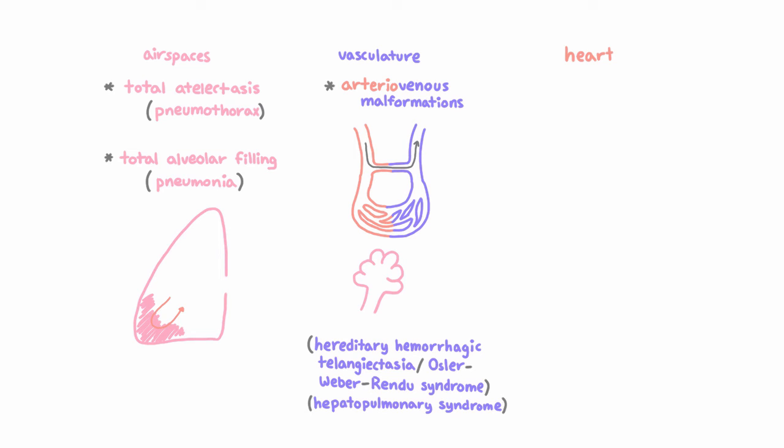Finally, right-to-left shunting can also occur within the heart, across a patent foramen ovale or an atrial septal defect, if the right heart pressures are elevated, which you can see in severe pulmonary hypertension, because if they're not elevated, the flow is going to go from left to right.